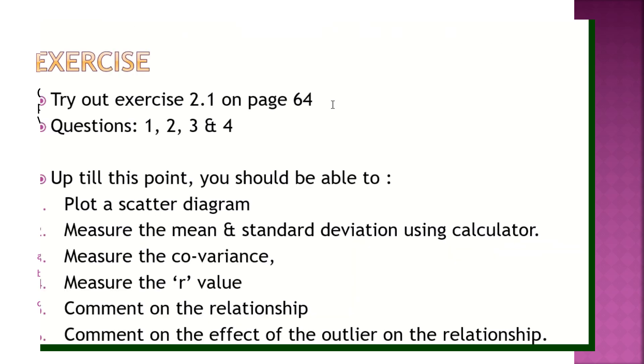All right, so that's example 1. So now basically, you can actually go on, move on and continue with your manual, which I will send another video for exercise 2.1. Don't worry. But up to this point, you should be able to plot your scatter diagram without any problems. You should be able to calculate mean and standard deviation using calculator. Calculate your R using calculator and also manually because I went through the formulas. Comment on the relationship and comment on the effect of outlier. What's the effect of outlier? Outlier causes false relationship. All right?